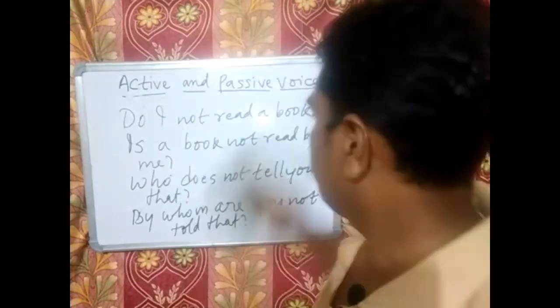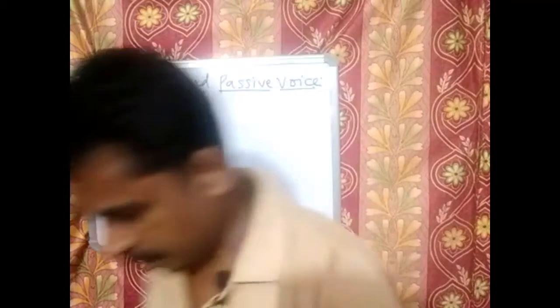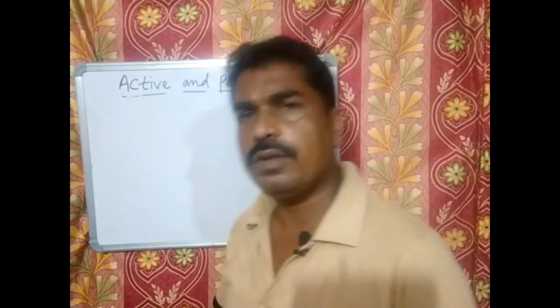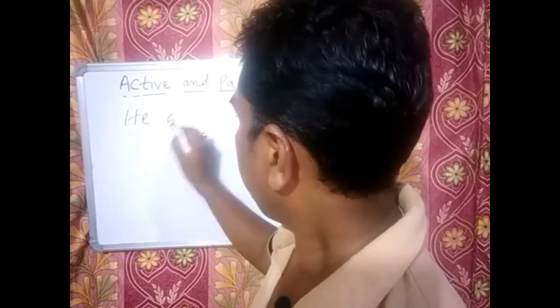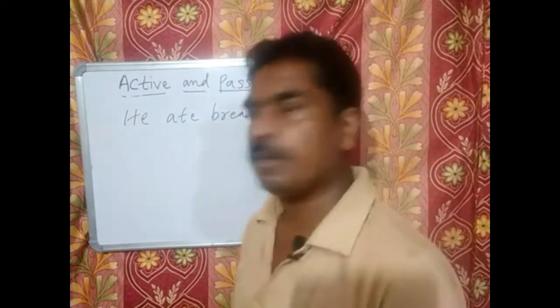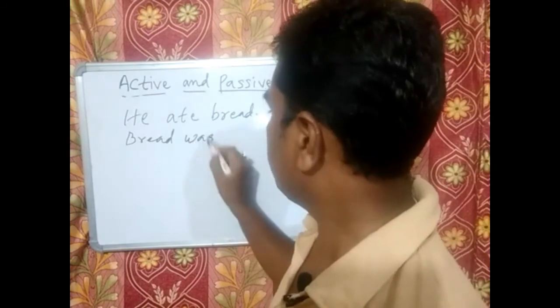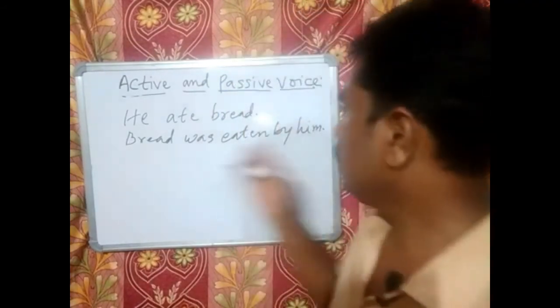The same rule applies for other tenses as well. Now let us discuss some examples from the past tense. For example, affirmative sentence in past indefinite: 'He ate bread.' The structure uses 'was' here, so the passive form is: Bread was eaten by him — 'he' changes to 'him.'